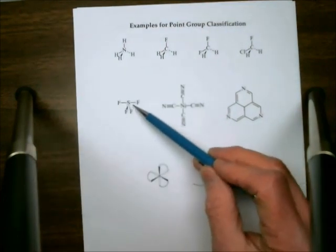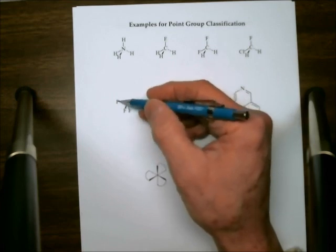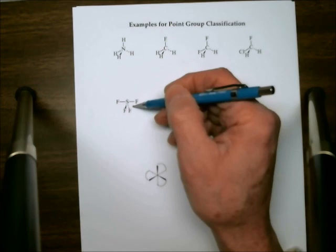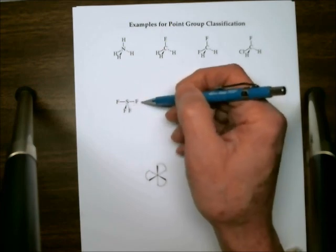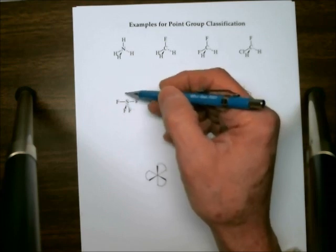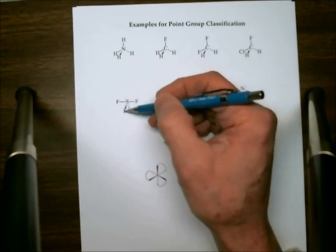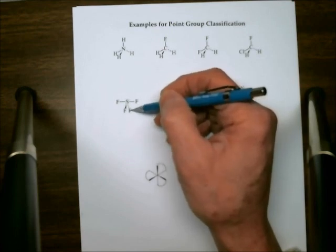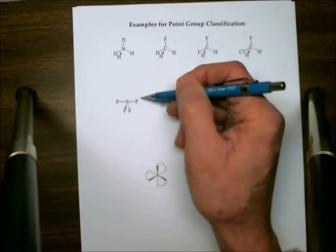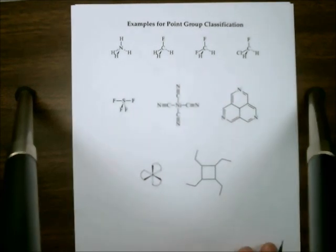Looking at SF4, which has a seesaw shape: there is a two-fold axis running up and down the page, flipping the two equatorial fluorines into each other and the two axial fluorines into each other. There's no horizontal mirror plane perpendicular to that axis, and no C2 axes perpendicular to it either. But there are two sigma-V planes — the F-S-F plane and the plane of the page — making this C2v.